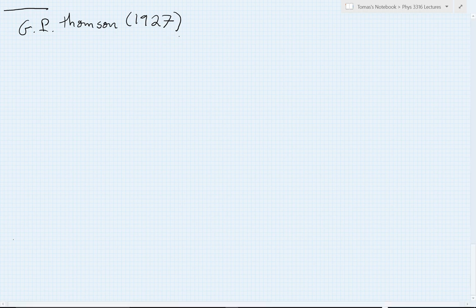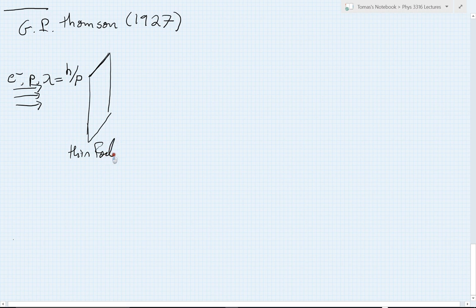So the way he did this experiment, super clever, is he took a beam of electrons. And these electrons had a certain momentum P. And so our hypothesis then is that we're going to get their arrivals of electrons described by an interference pattern, a la 2214 or 2218, with a wavelength equal exactly to h over P. He then sent these electrons in to hit a target again. And once again the target is going to be a thin foil.